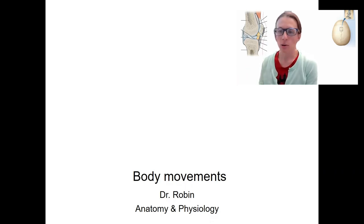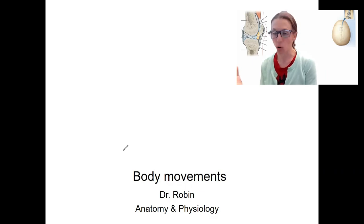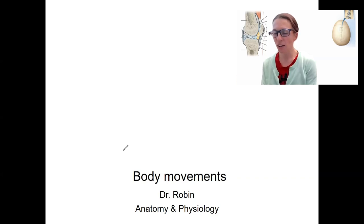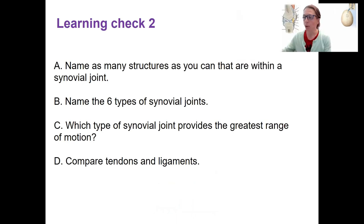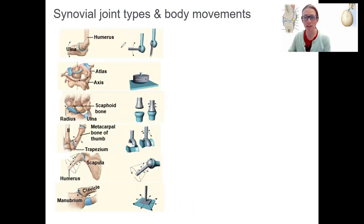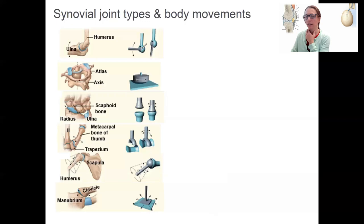Now we're going to talk about body movements — how a joint is going to cause movement based on its structure. These are our synovial joints, diarthroses, and the muscles around that joint allow it to function in one plane or axis or more than one. Before we go into that, pause to do a learning check on synovial joints.